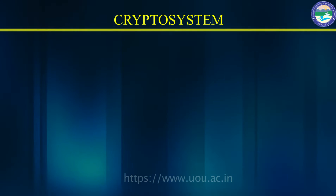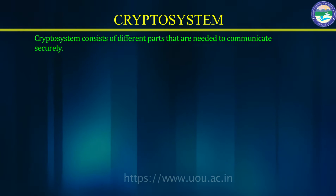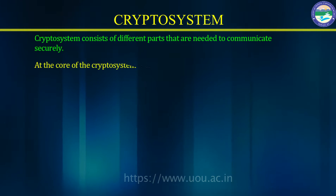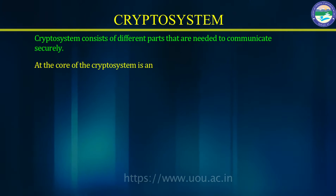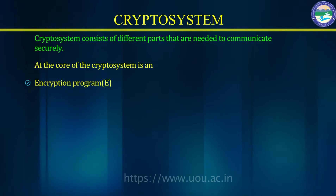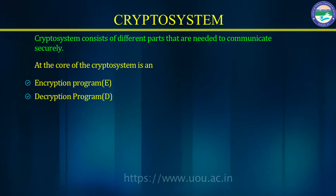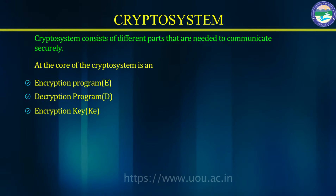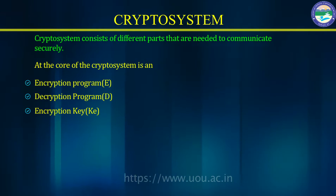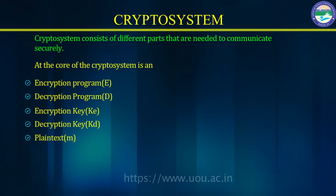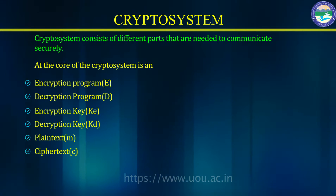A cryptosystem consists of different parts that are needed to communicate securely. At the core of the cryptosystem is an encryption program denoted by capital E, a decryption program denoted by capital D, an encryption key denoted by KE, a decryption key denoted by KD, plaintext denoted by M, and ciphertext denoted by C.